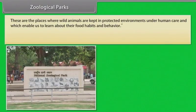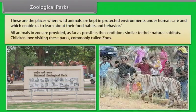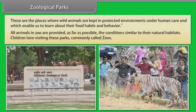Zoological parks are places where wild animals are kept in protected environments under human care, enabling us to learn about their food habits and behavior. All animals in a zoo are provided, as far as possible, conditions similar to their natural habitats. Children love visiting these parks, commonly called zoos.